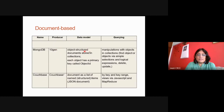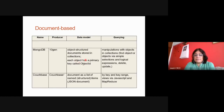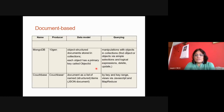In MongoDB, the data model is an object-structured model stored in collections, and each object has a primary key called object ID, generated by the system. In CouchBase, a document is a list of JSON objects — a collection of BSON objects. For data manipulation like insert, delete, and update: in CouchBase it is done by key and key range, via JavaScript or MapReduce. For MongoDB, APIs are provided through which you write code.